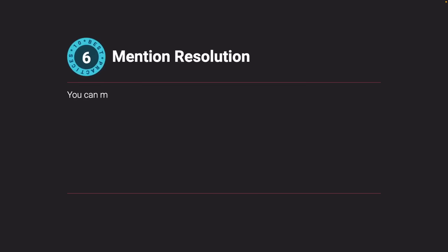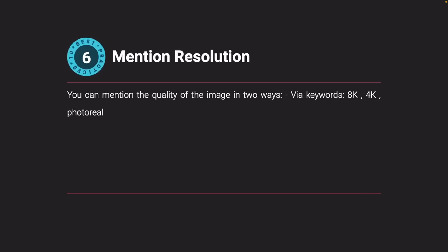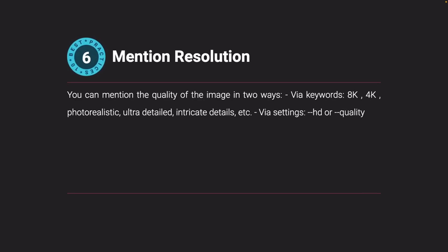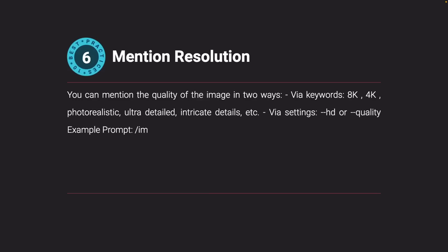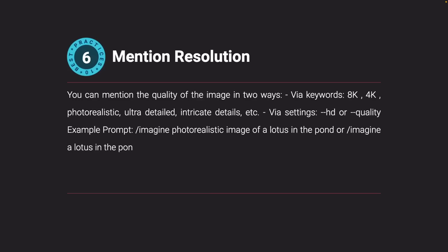Mention resolution. You can specify image quality in two ways: via keywords such as 8K, 4K, photorealistic, ultra detailed, or intricate details; or via settings like HDR quality. Example prompts: '/imagine photorealistic image of a lotus in the pond,' or '/imagine a lotus in the pond quality 6.'